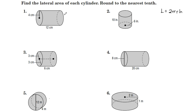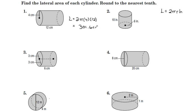For number 1, we'll do 2 pi, radius of 4, and a height of 12. Putting all that in the calculator, we get 301.6 centimeters squared.